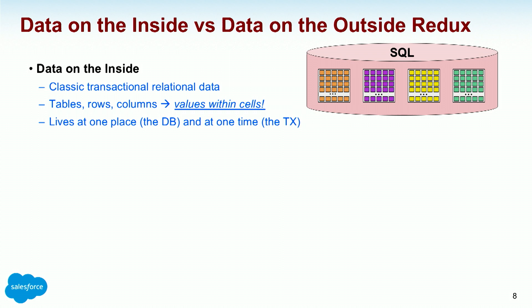What's data? I wrote a paper in 2005 called 'Data on the Inside versus Data on the Outside.' Back in the day, the only data we talked about was inside the relational database — tables, rows, columns, values within cells. That data lives in one place — the database — and one time — the transaction. Transactions provide ordering called serializability: can I make the entire database look like one thing after another happened? The programmer doesn't see change underneath them during the transaction. All phenomenal stuff, but getting orders of magnitude more challenging as we go bigger into distributed scalable systems.